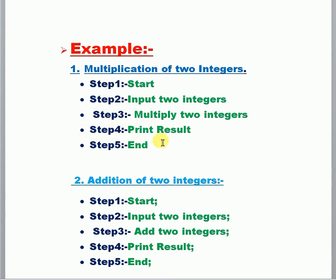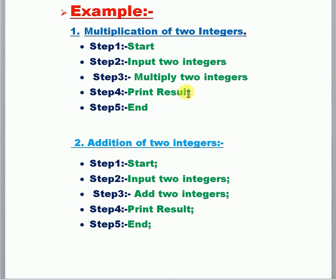Suppose multiplication of two integers: Step 1 — Start. Step 2 — Input two integers, suppose 5 and 2. Step 3 — Multiply two integers: 5 into 2 equals 10. Step 4 — Print the result. Step 5 — End. You have to print the result and then end.